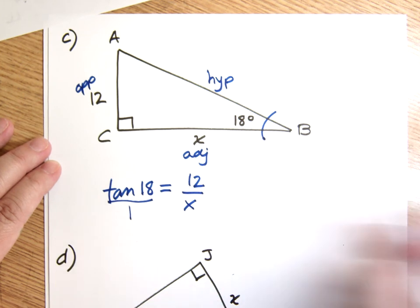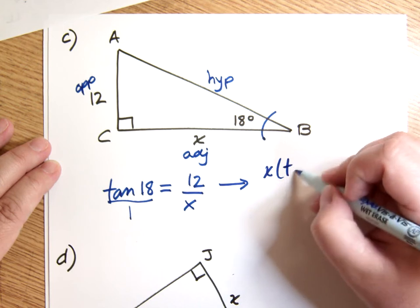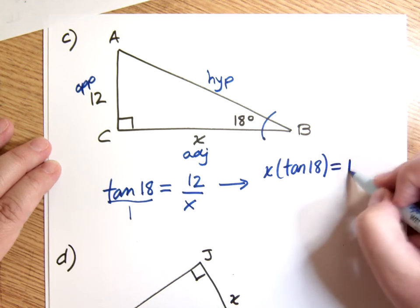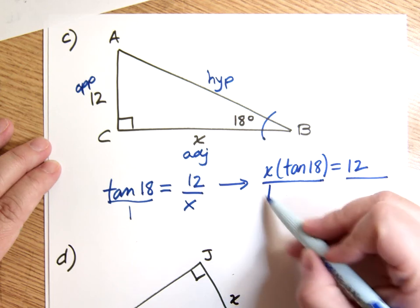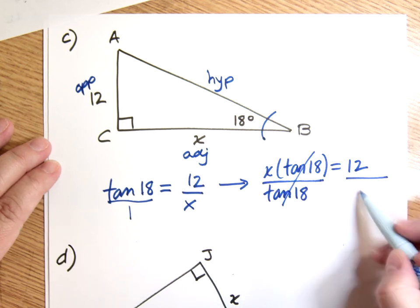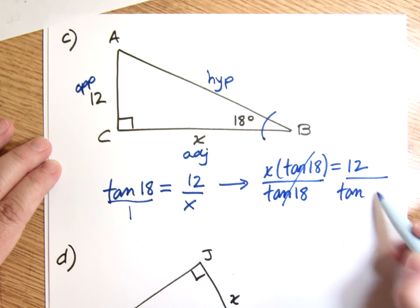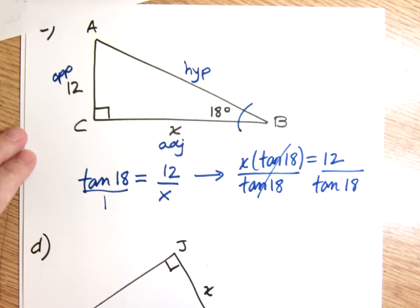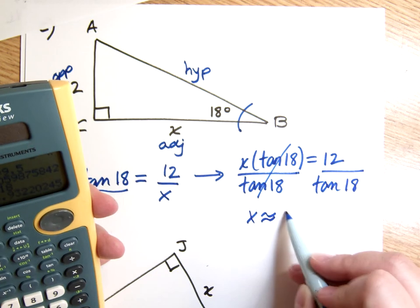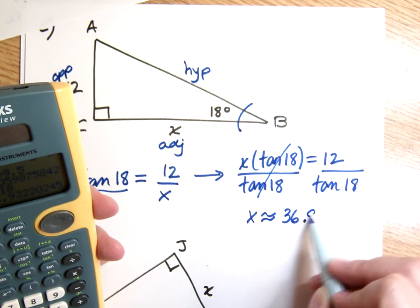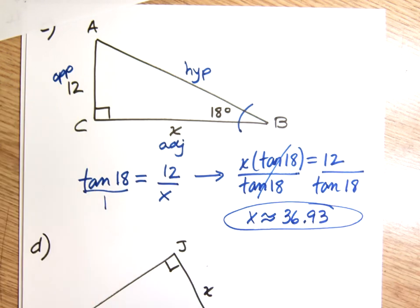So my equation is going to be tangent of 18 degrees equals opposite over adjacent. Put that over 1, cross multiply, and I get X times tan 18 equals 12. Divide both sides by tan 18 because X is not by itself yet. X is not alone, so we don't stop. We don't stop until X is alone, and that's when we go to the calculator. So X is alone. I'm ready to do it in my calculator. 12 divided by tan 18 gives me 36.93.